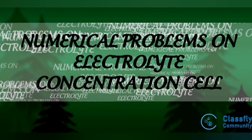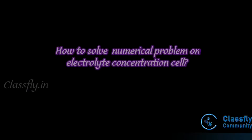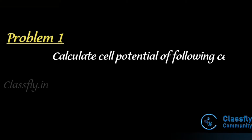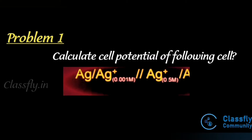In this topic we will discuss how to solve numerical problems on electrolyte concentration cells. The first problem is: calculate the cell potential of the following cell — Ag | Ag⁺ (0.001 M).